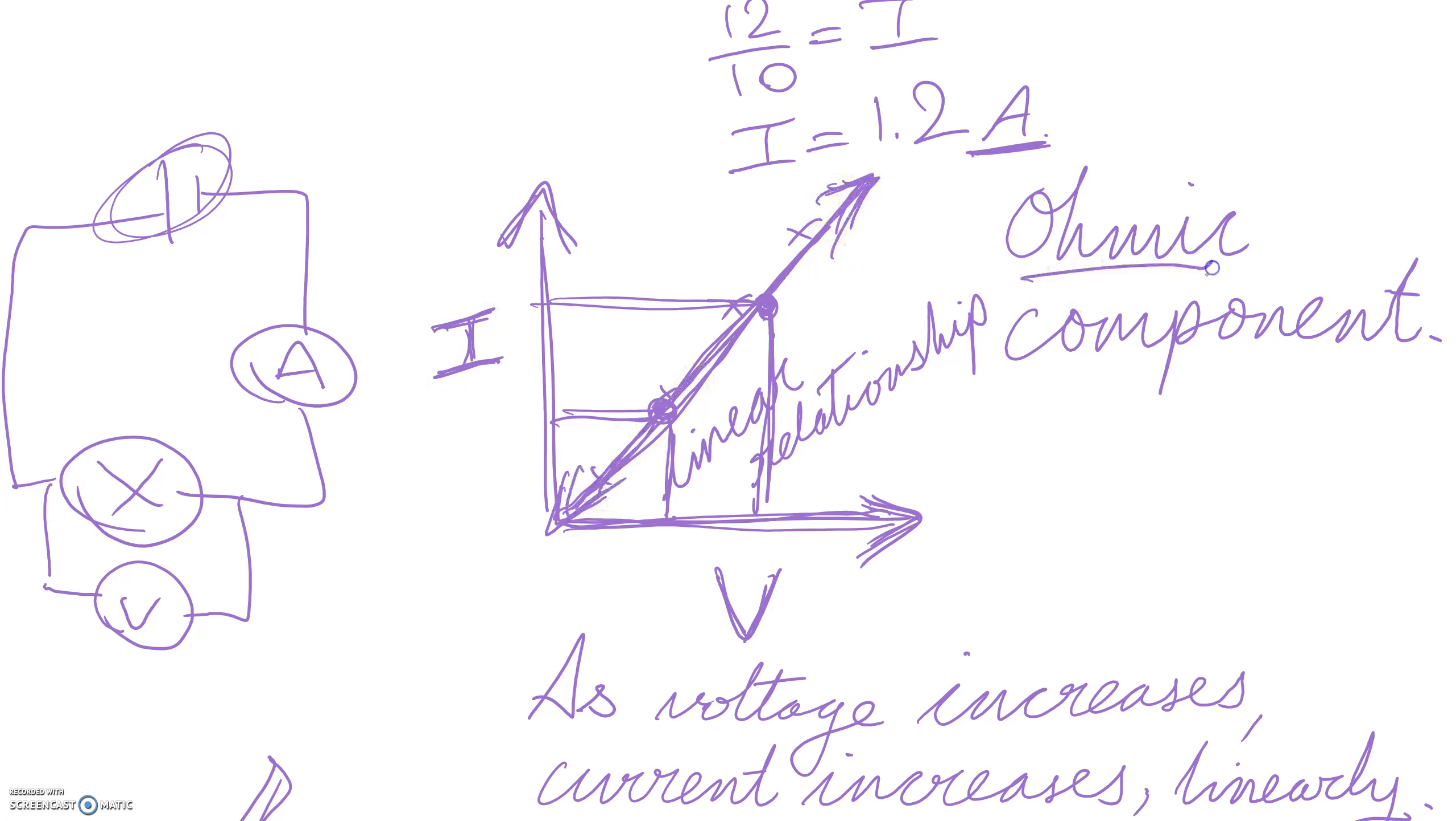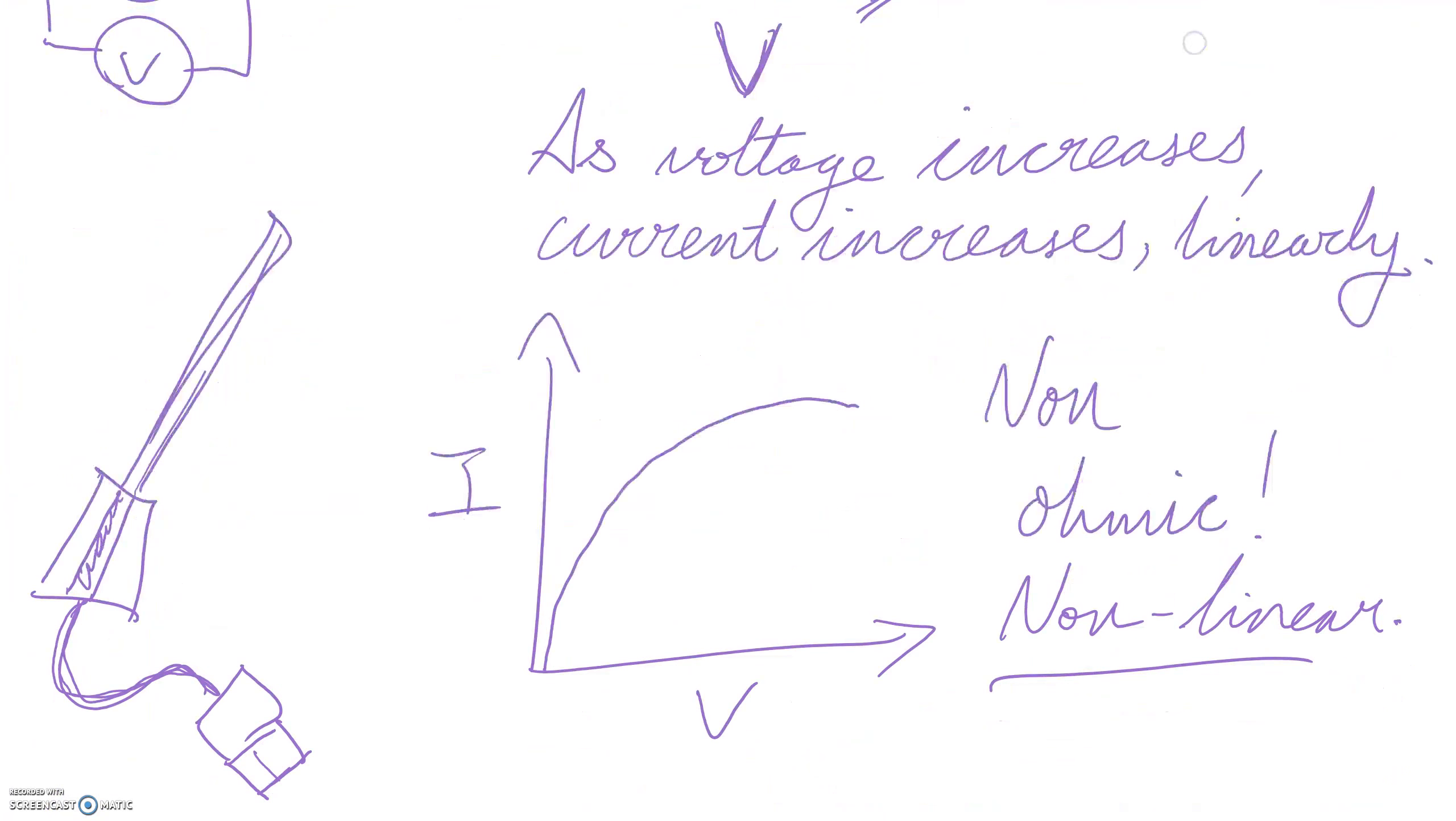If you plot voltage versus current and you get a straight line, no maths, you can just say it's an ohmic component. If you plot voltage versus current and it's not linear, maybe it's this, maybe it's this, maybe it goes up and then down. Who knows? As long as it's anything but that straight line, you can say it is a non-ohmic device.